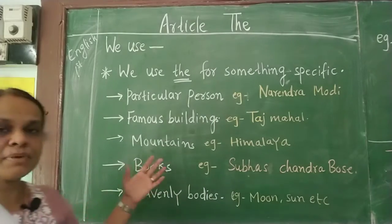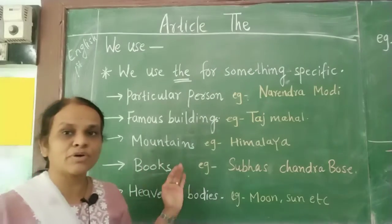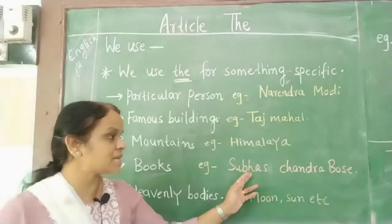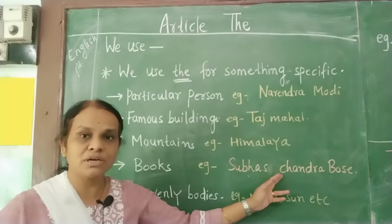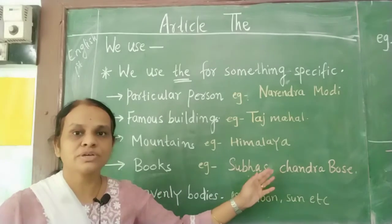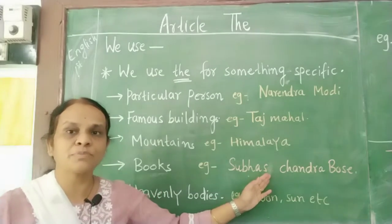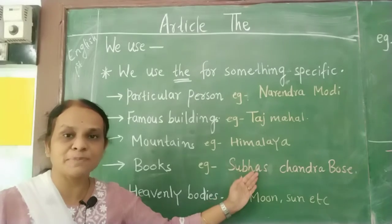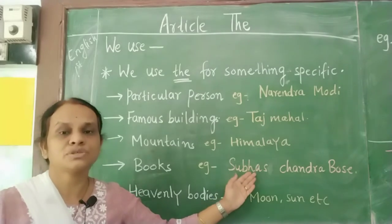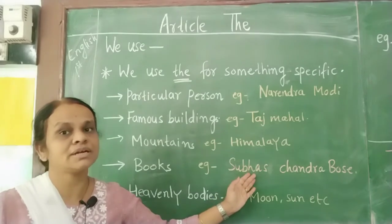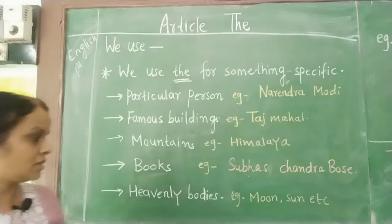Books. Koi bhi alag books hai, koi bhi book hai. Suppose I have taken here the book Subhash Chandra Bose. So yeh ek particular book hai, so yeh specific book hai, unique book hai. So we are using here 'the'.